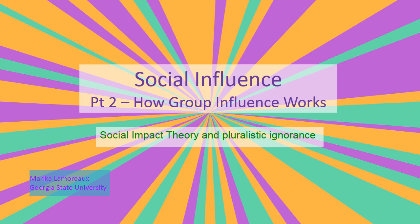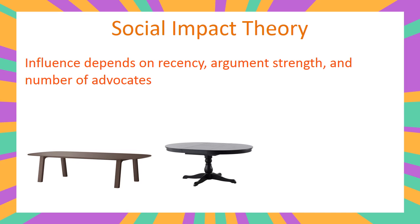We're on the second lecture of how group influence works. Social impact theory says that influence depends on these three things: recency, argument strength, and number of advocates.